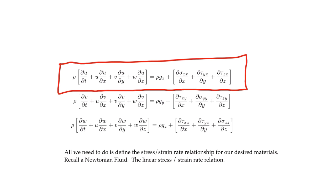To move forward, we need to express the normal and shear stresses in terms of the velocity variables u, v, and w. We do this by expressing stresses in terms of strain rates. Recall from the introductory chapter that a Newtonian fluid is one where stress is linearly proportional to the strain rate. Most fluids of practical interest are Newtonian fluids. Substituting this constitutive relation gives us the Navier-Stokes equations, which allow us to solve a tremendous number of practical fluid problems.